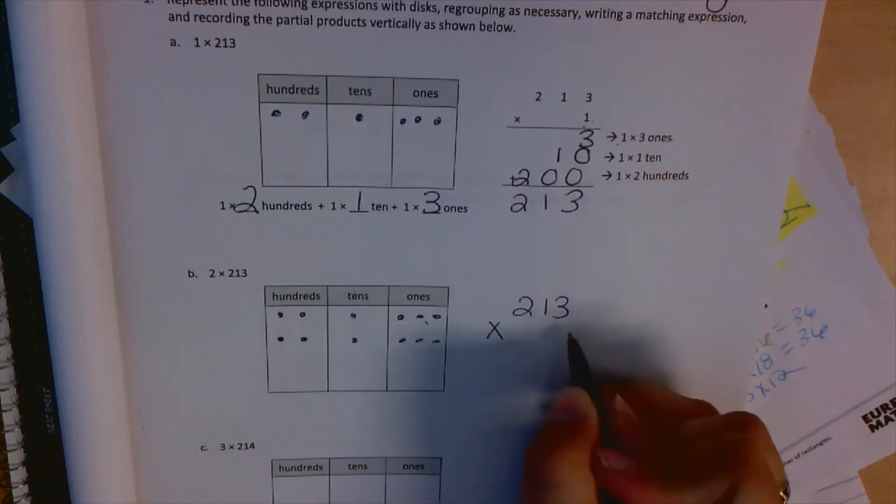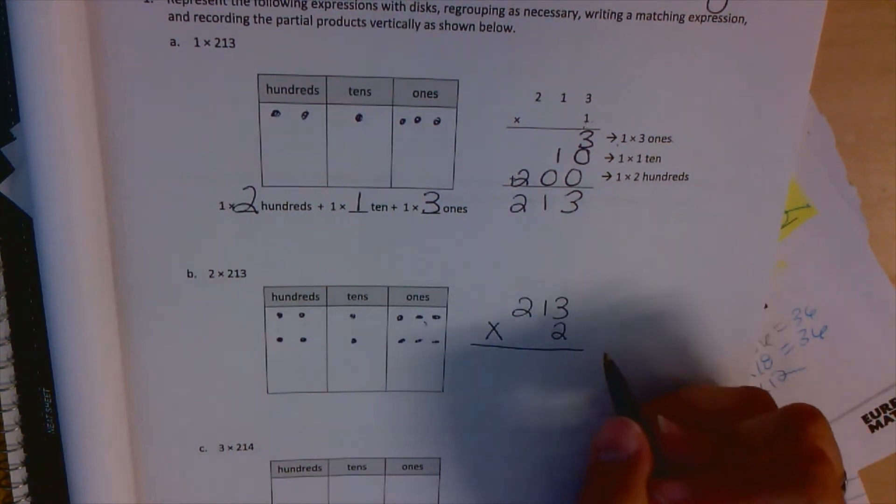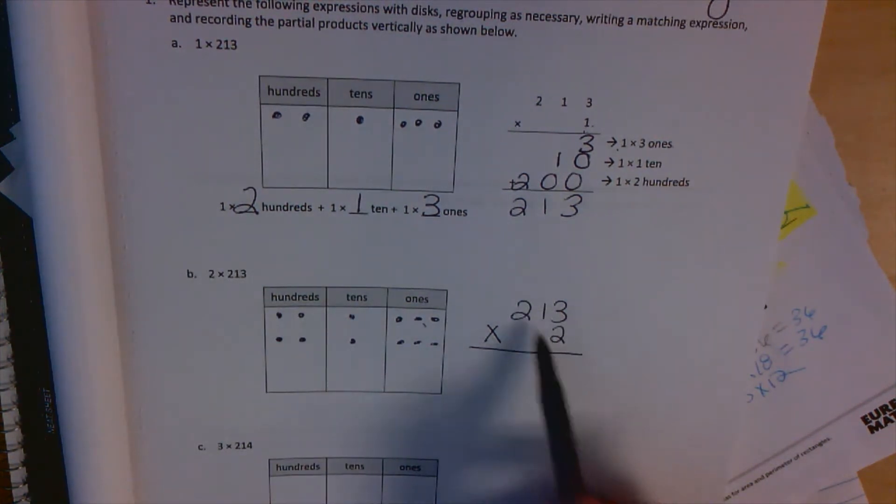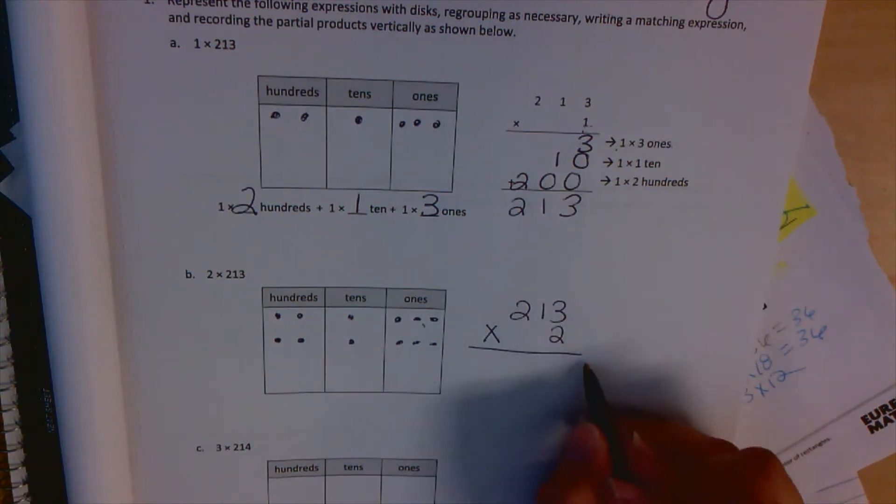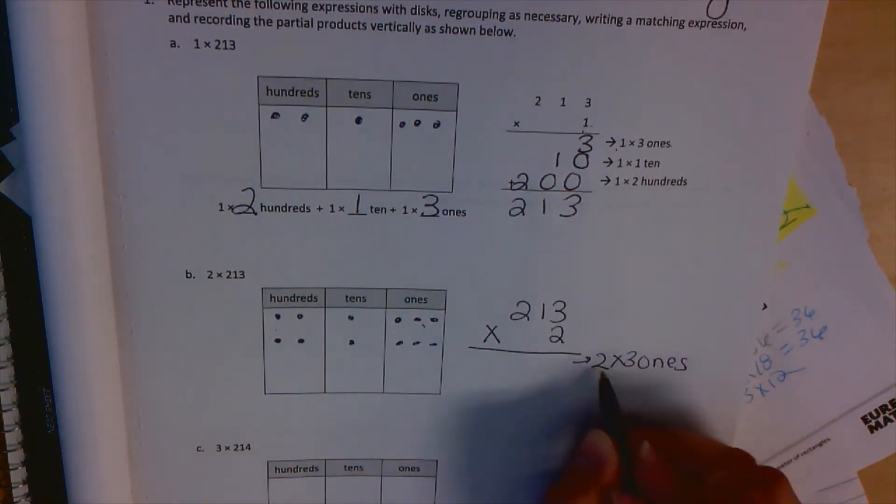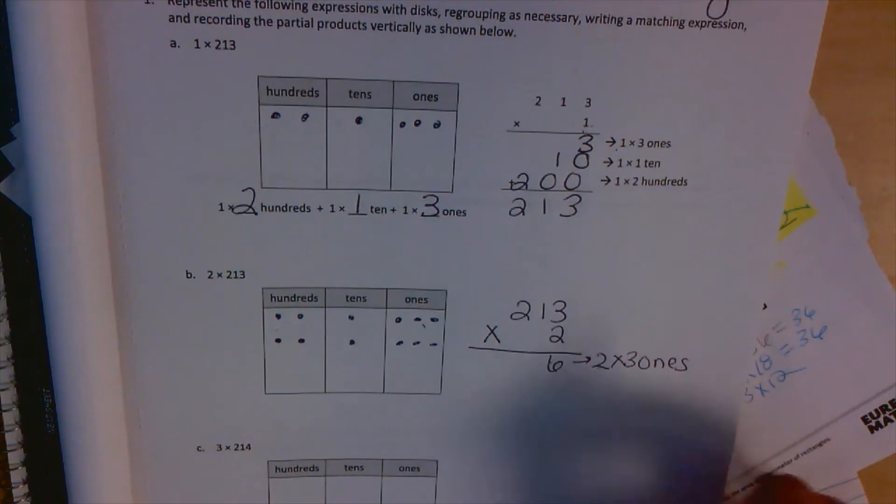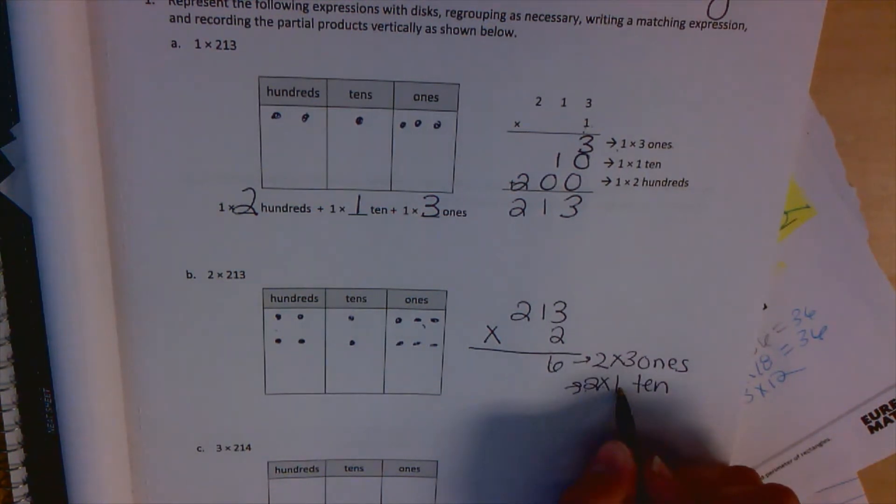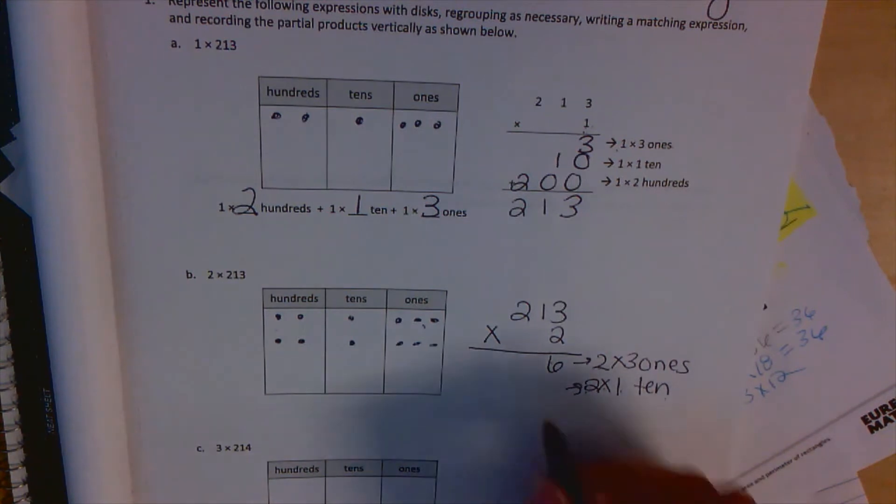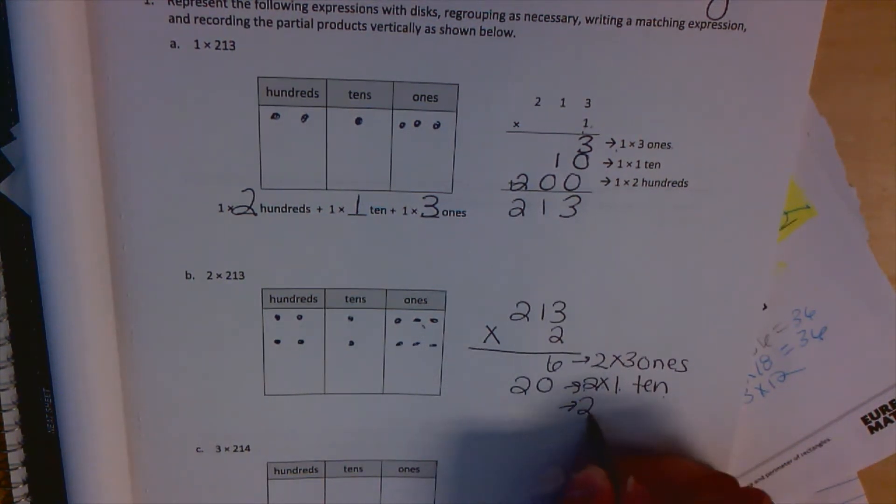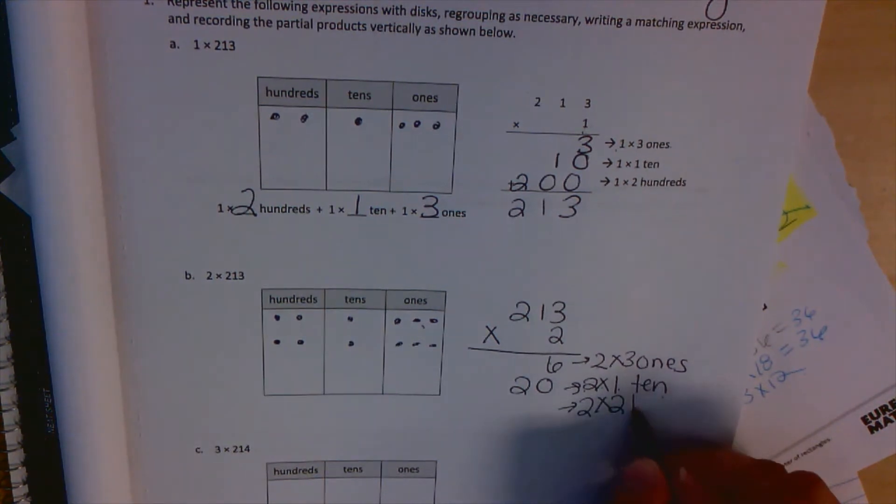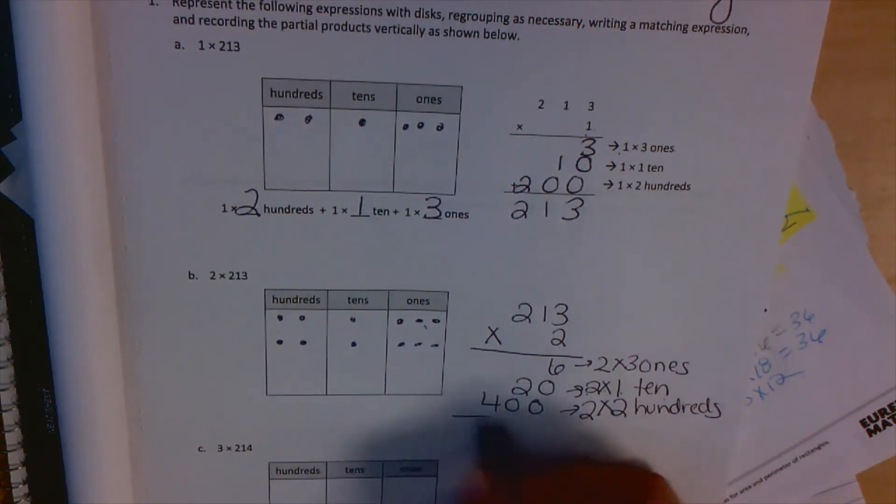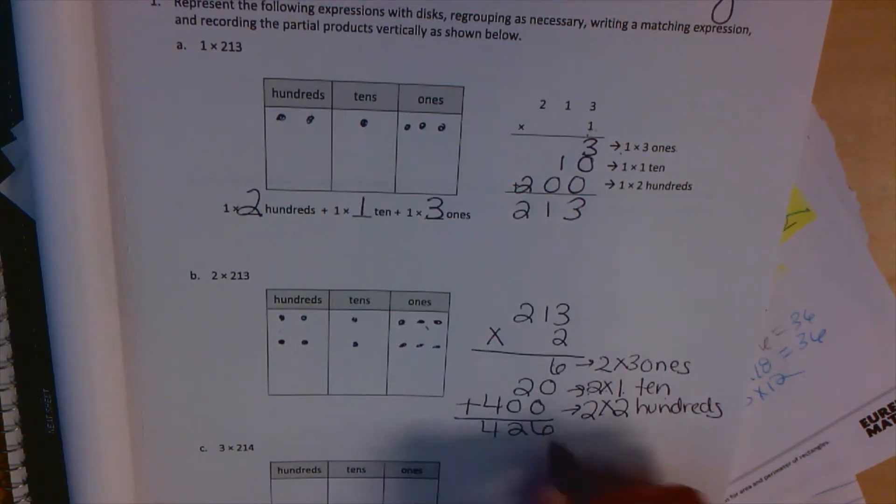And let's do our partial product, breaking it down by part and finding the multiplication value of each value multiplied by 2. So if we have 2 times 3 ones, 2 times 3 is 6, it's in ones, stays in ones. Then we have 2 times 1 group of 10. 2 times 1 is 2, it's a ten, so that's 20. And then 2 times 2 hundreds: 2 times 2 is 4, the value is hundreds, 400. Add that together: 426.